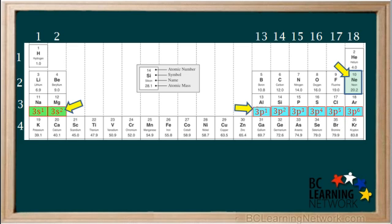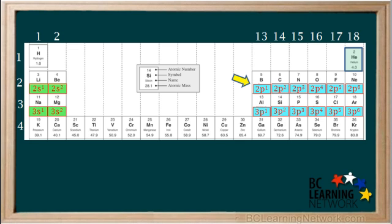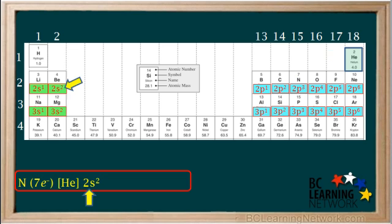We've now pointed out how we can find the configurations for any element in period 3. It can be shown that for period 2, the core is helium. And the configurations of lithium and beryllium end in 2s1 and 2s2, respectively. And the configurations of boron through neon fill up the 2p orbitals from 2p1 to 2p6. So for example, the noble gas core notation of nitrogen is helium, 2s2, 2p3.